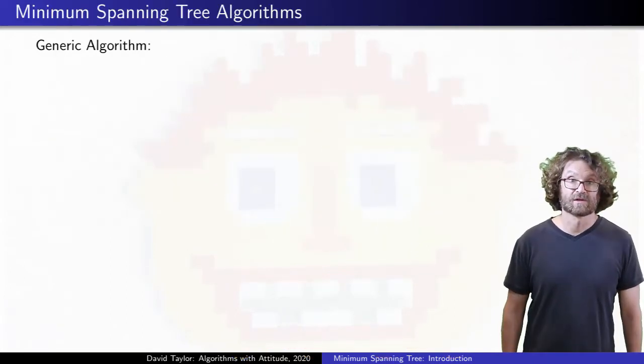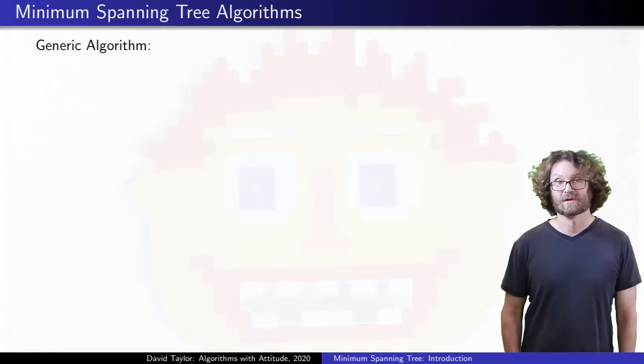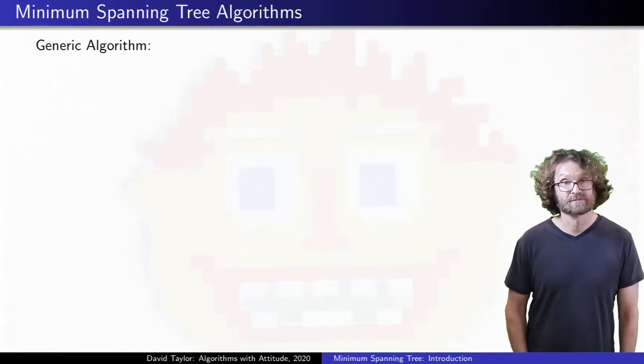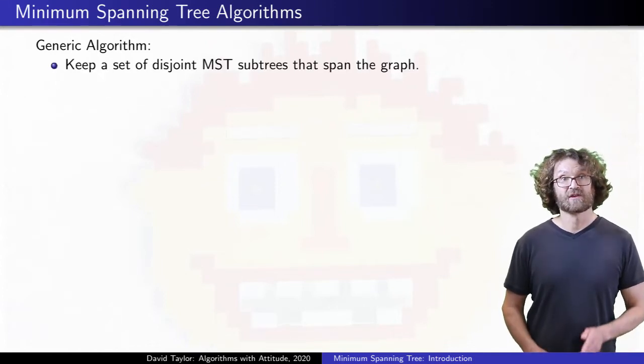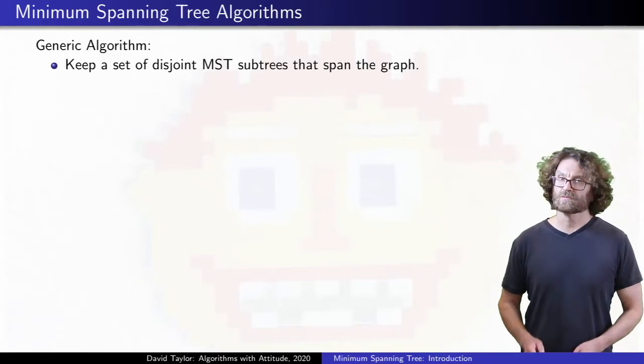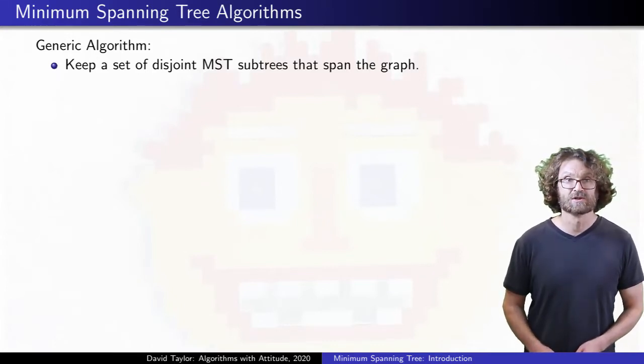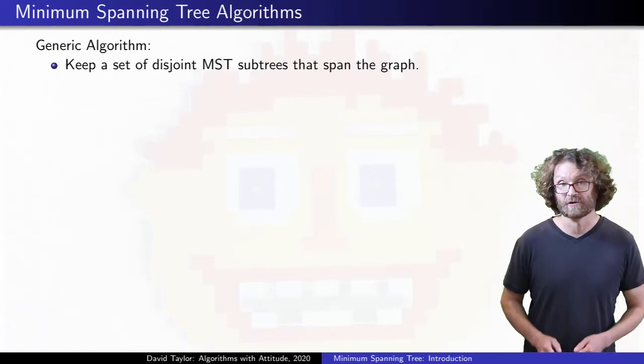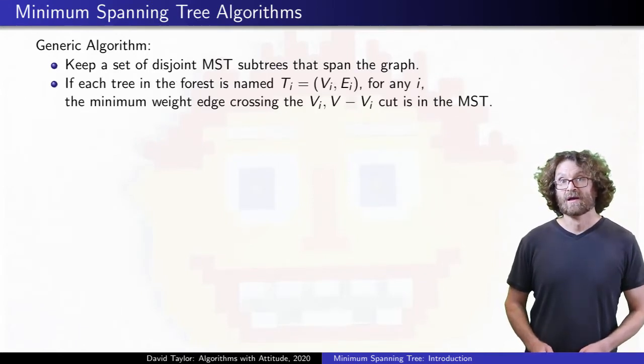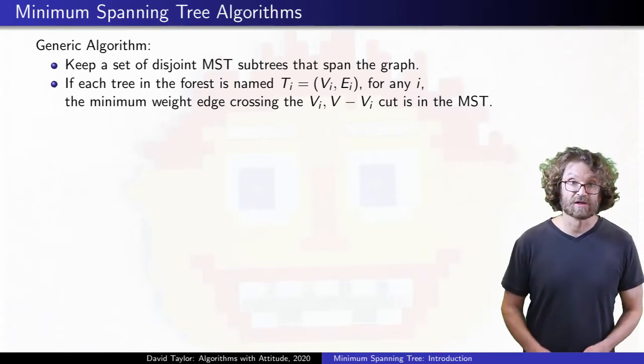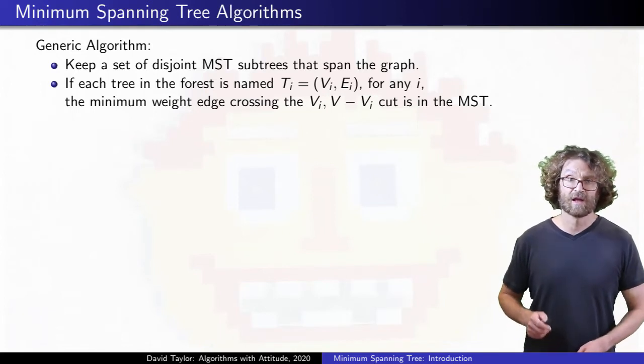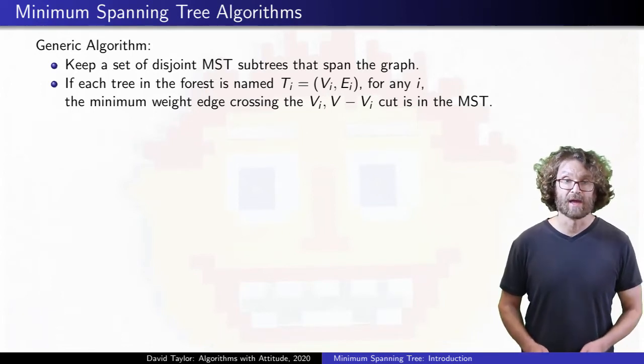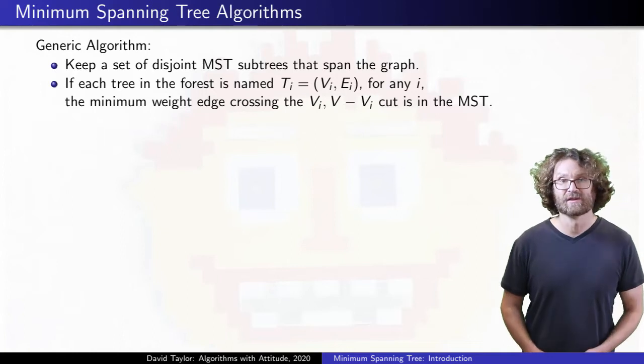Great, we are done with the theorems, and ready to start the algorithms. Abstractly, each will keep track of a bunch of trees, each of which is a subtree of the minimum spanning tree. All of those trees combined will include each vertex in the graph once they make a spanning forest. By finding minimum weight edges crossing the cut between one of the forest trees and the rest of the graph, the algorithms find minimum spanning tree edges, and add them to the forest.